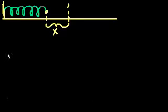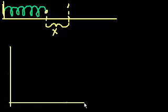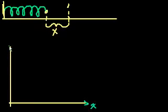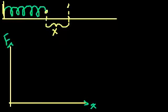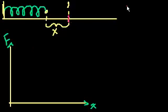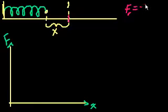Let's draw a little graph here with a y-axis and x-axis. This axis is how much I've compressed it, x, and then the y-axis is how much force I have to apply. So when the spring was initially all the way out, to compress it a little bit, how much force do I have to apply? Well, Hooke's law told us that the restorative force is equal to negative k, where k is the spring constant, times the displacement.